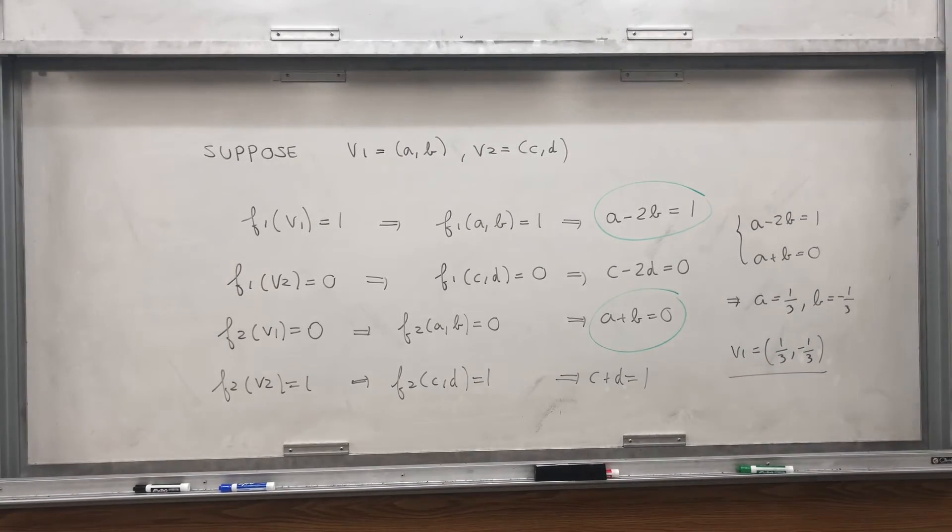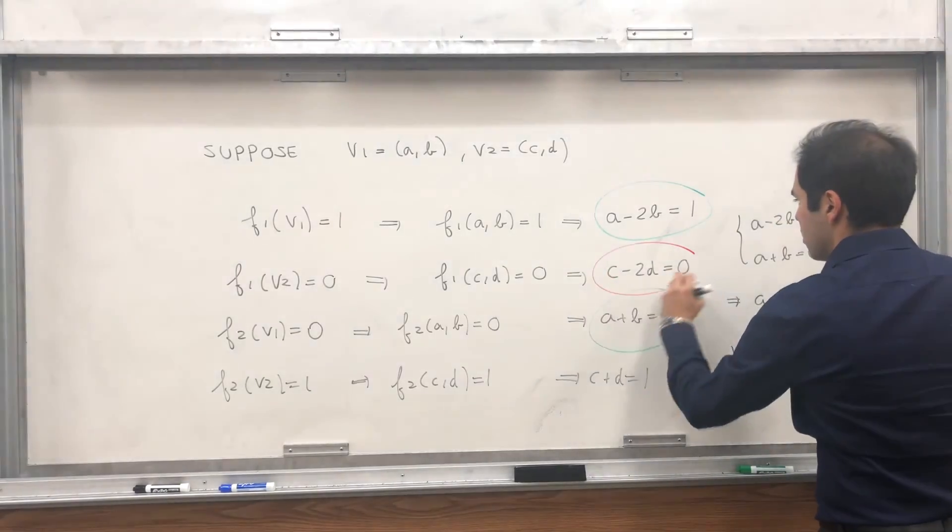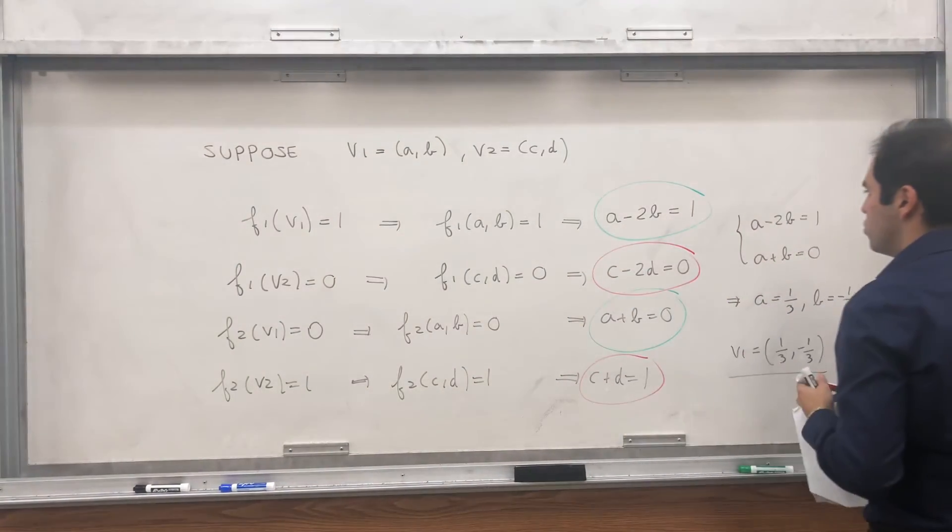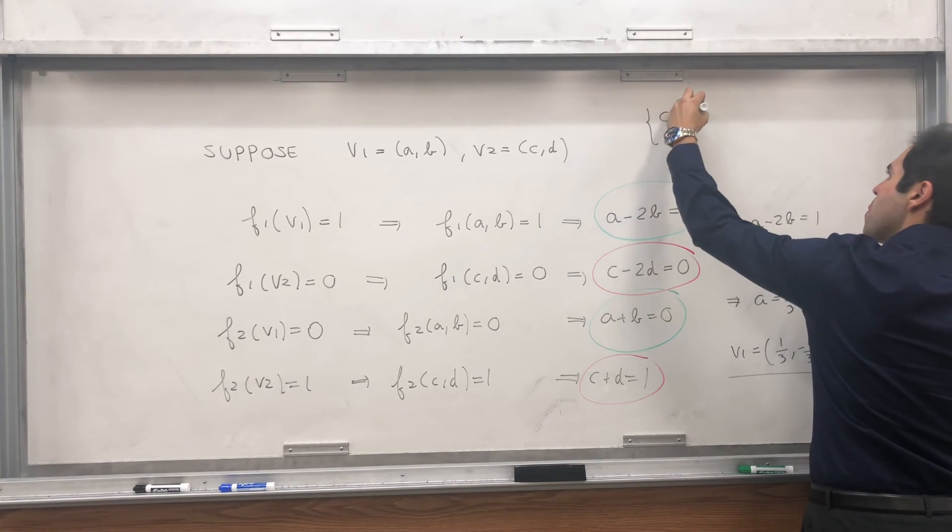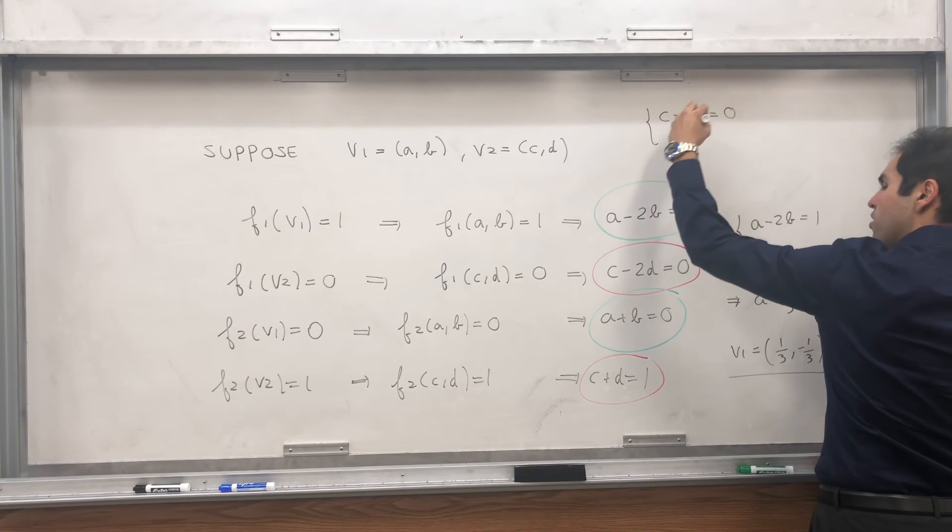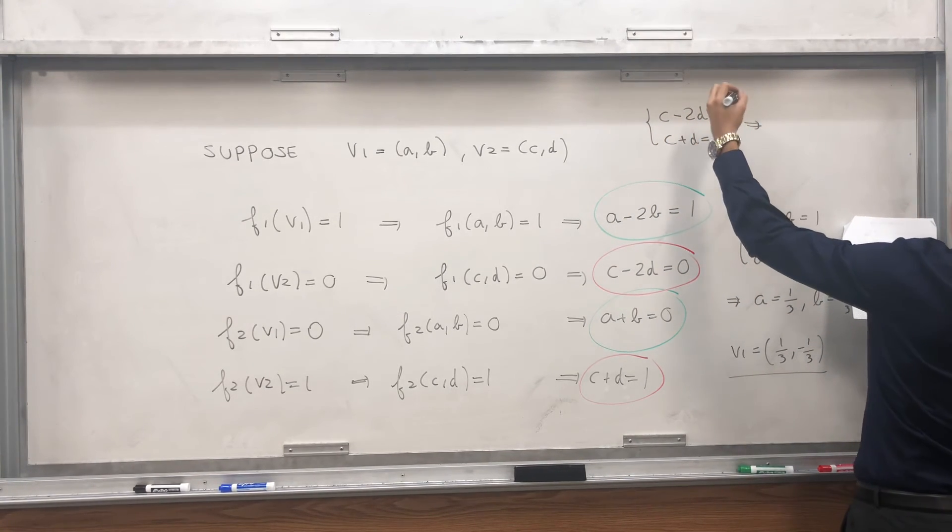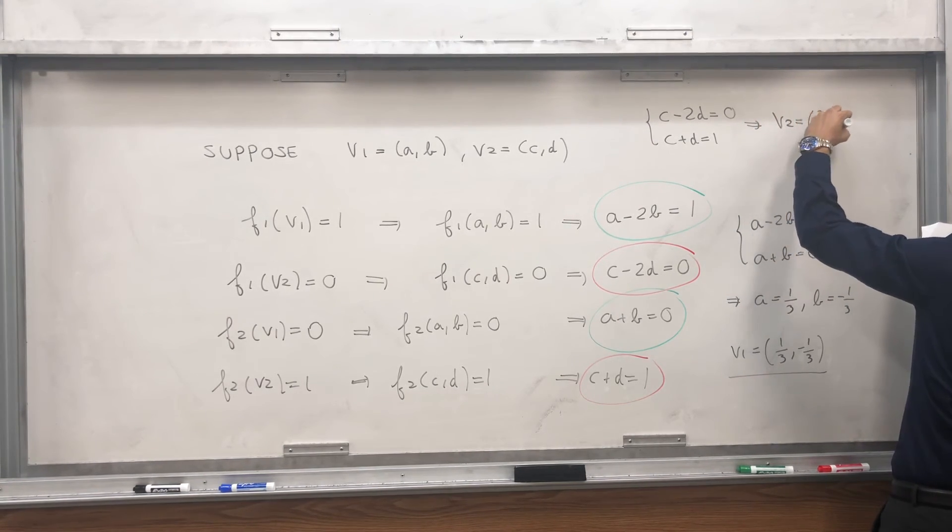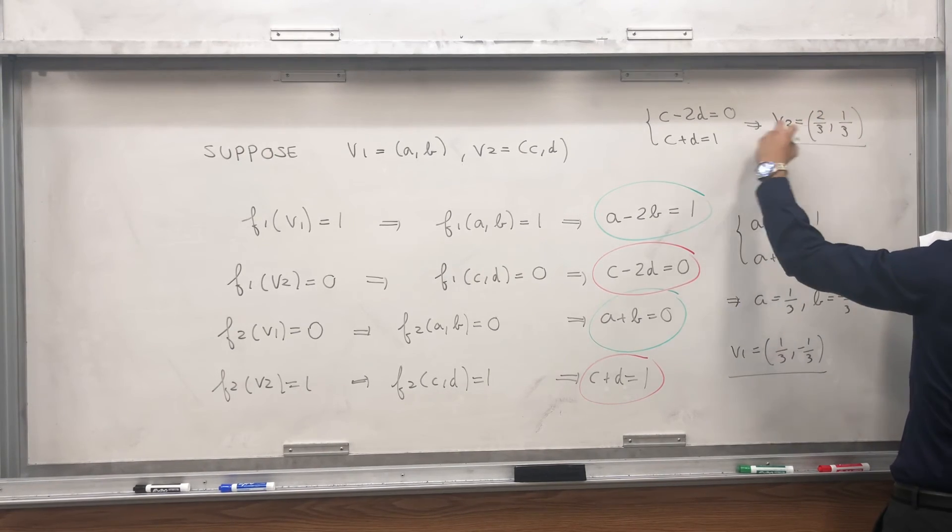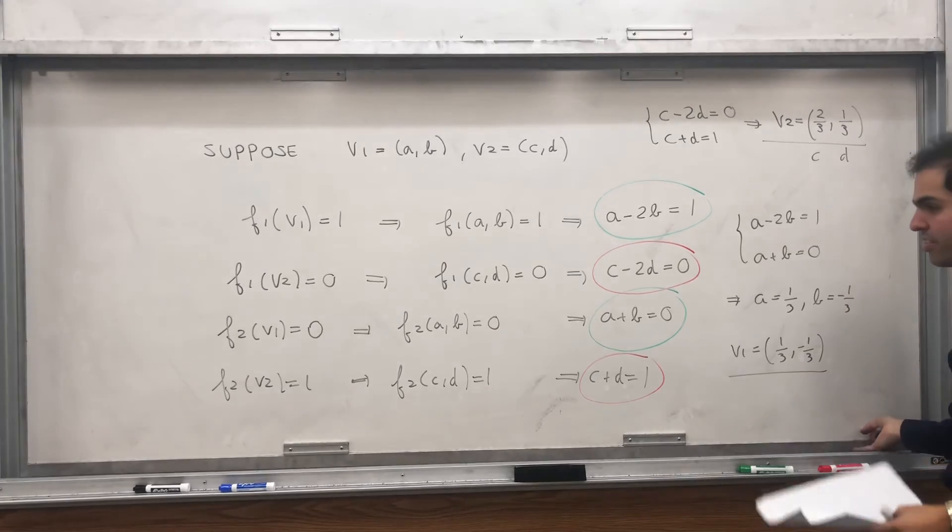Good? And then, let's use the second pair to figure out V2. So, c minus 2d equals 0, and c plus d equals 1, and I think you just get 2 thirds, 1 third. So that should give you c, and that should give you d. And that is your answer then.